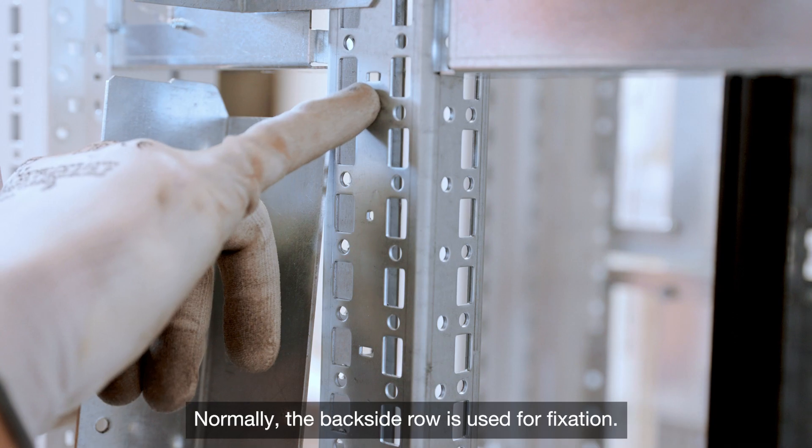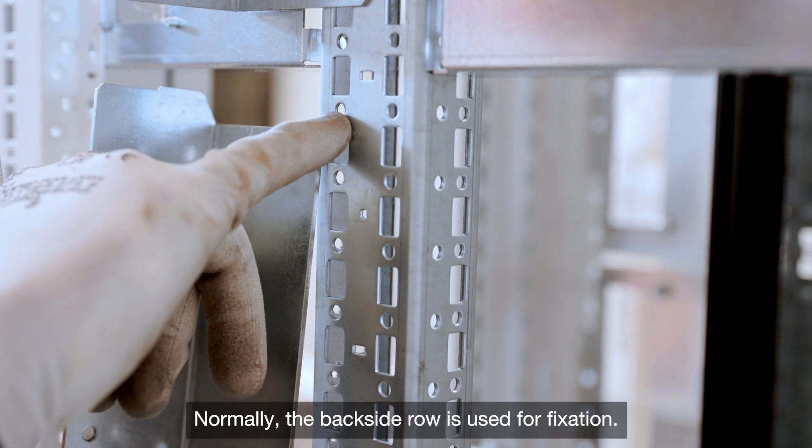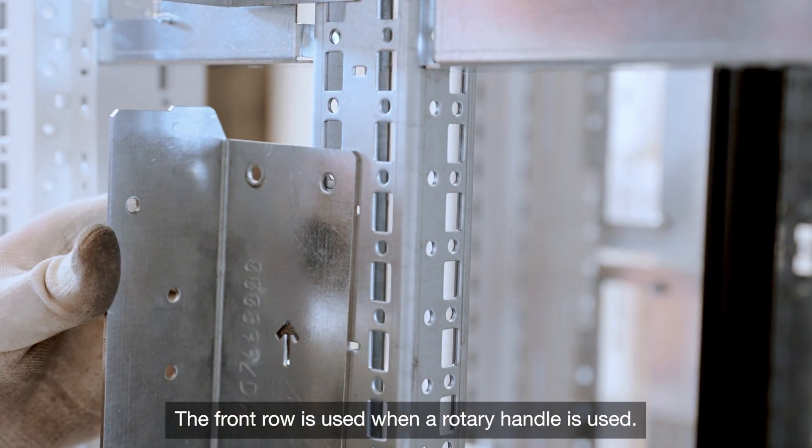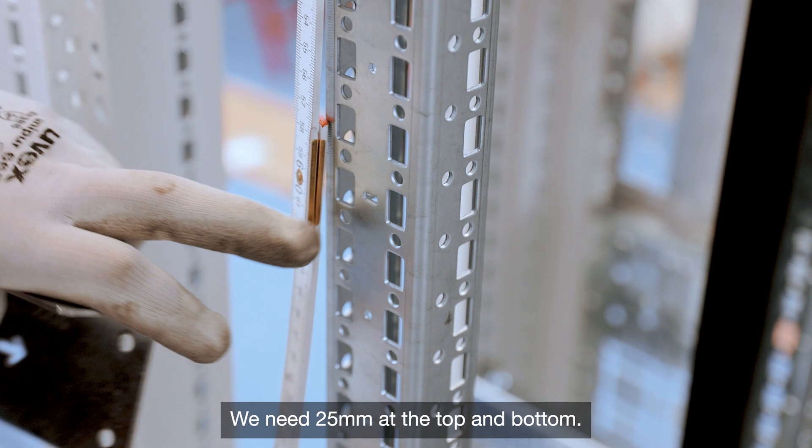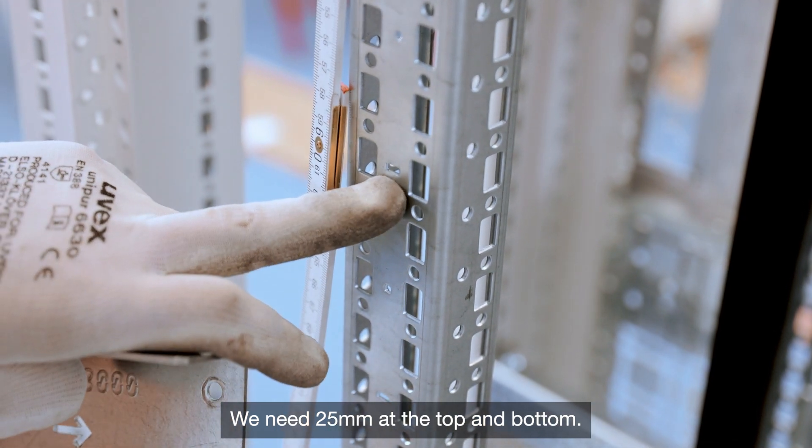Normally, the backside row is used for fixation. The front row is used when a rotary handle is used. We need 25mm at the top and bottom.